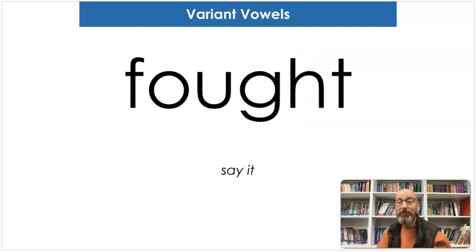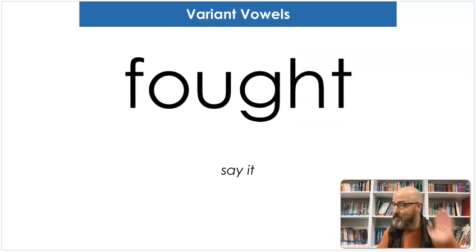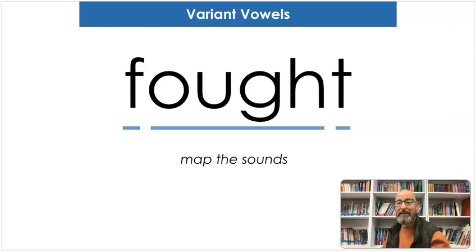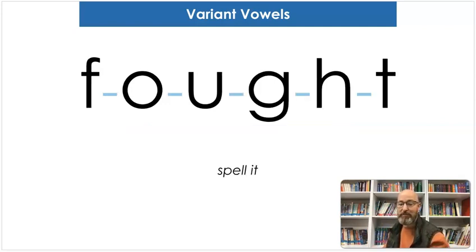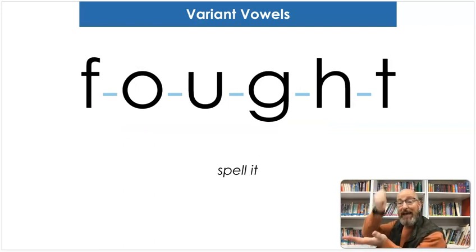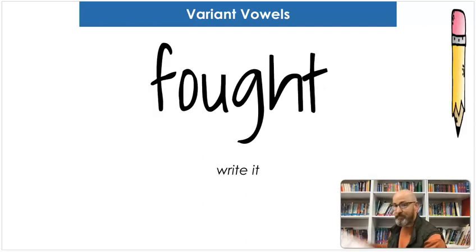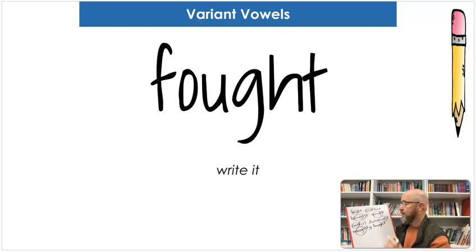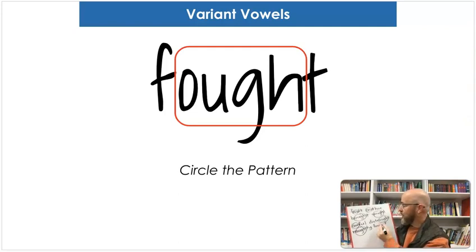Our next word is fought. Say fault. Map the sounds: F-A-U-T. Fought. That's the past tense of fight — you fought for something. Let's spell it: F-O-U-G-H-T. Fought. And let's write it: F-O-U-G-H-T. What makes the "aw" sound? O-U-G-H. Very good. Circle it.